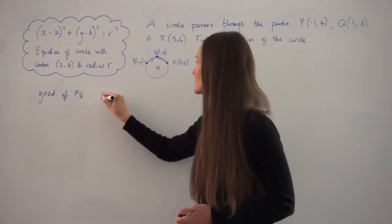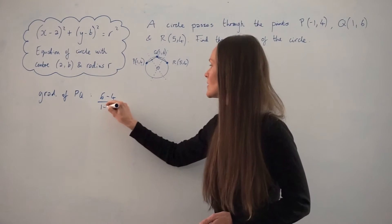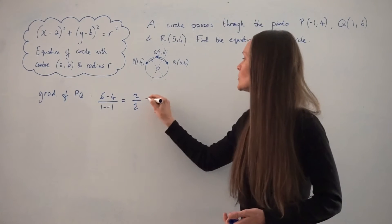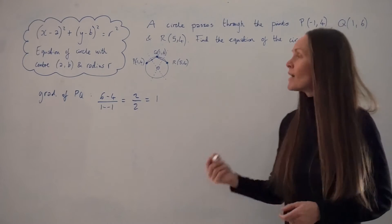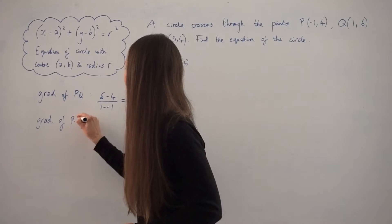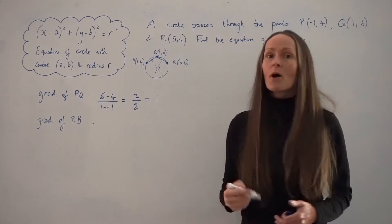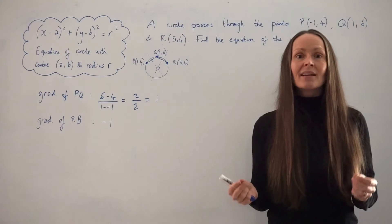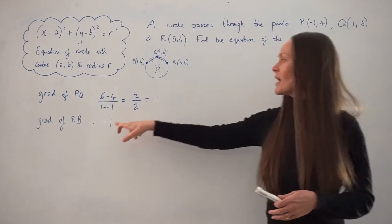For PQ: the Y values are 4 and 6, so 6 take away 4. The X values are 1 and -1, so 1 take away negative 1 — watch out for the double minus. That gives 2 over 2, which equals 1. So the gradient of chord PQ is 1. The gradient of the perpendicular bisector of PQ is therefore negative 1, because when two lines are perpendicular their gradients multiply to give negative 1.